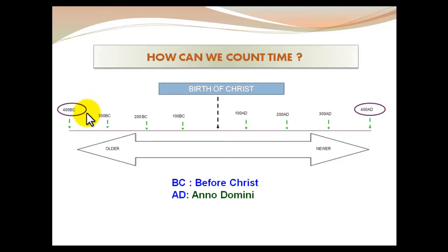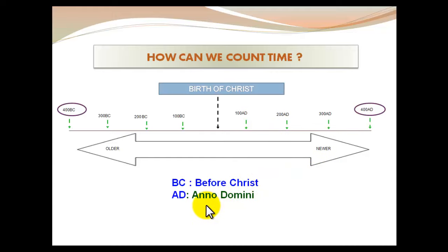In English they say BC, before Christ — this is the same — but the difference is after Christ. They use a Latin expression that means 'the year of God': anno domini. So when you refer to a date before Christ you say BC, but after Christ you must say AD or anno domini.